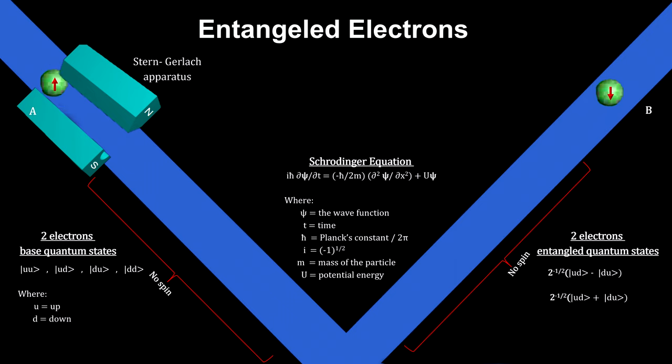At the same instant, the other electron spin is determined. If A was up, B will be down. If A was down, B will be up.